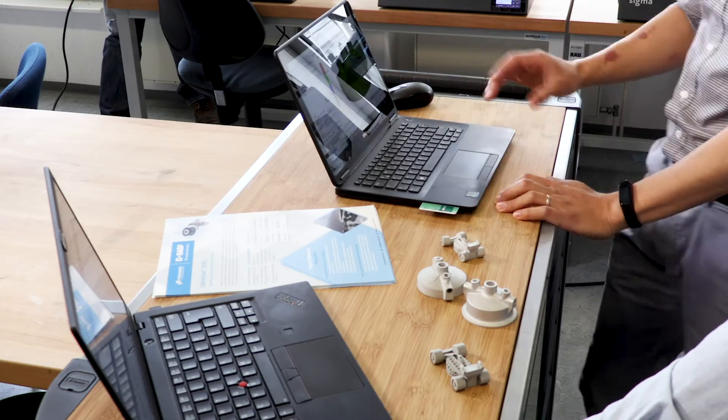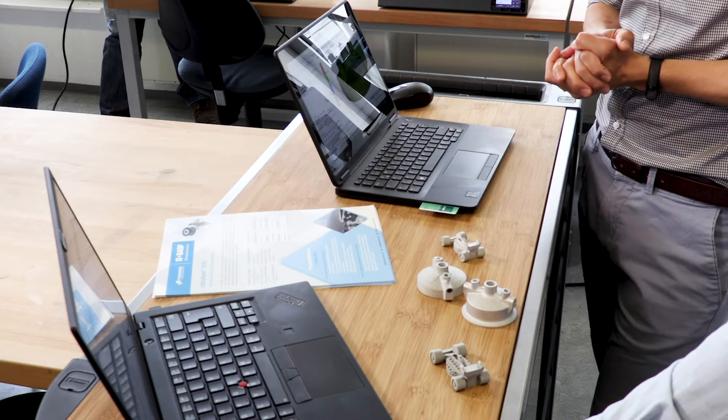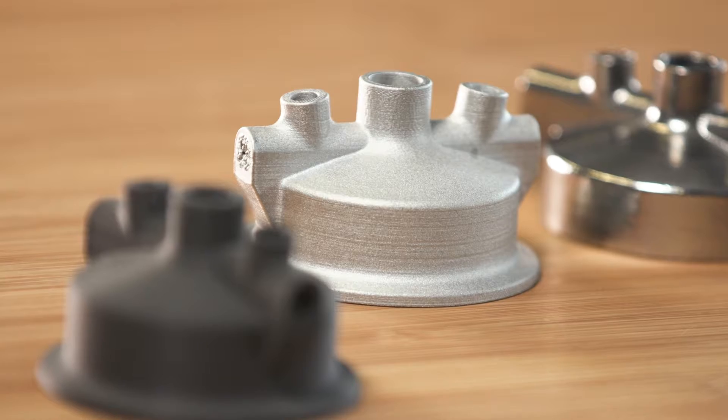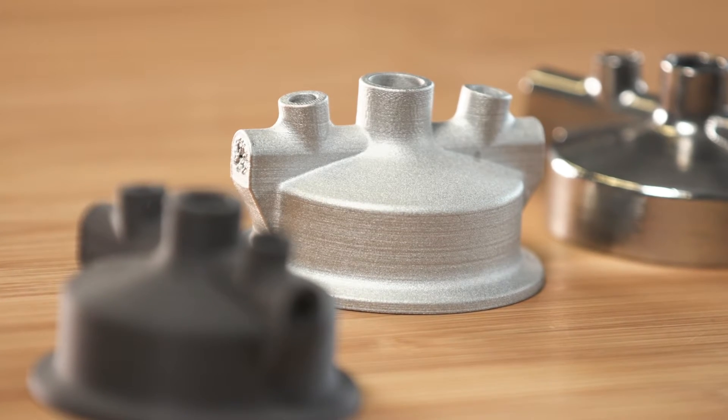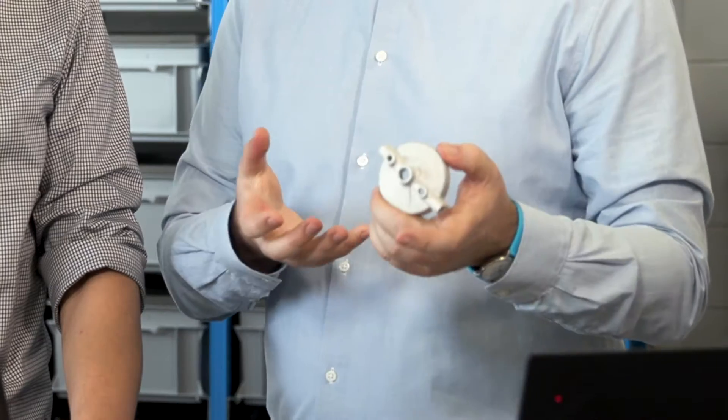So the first one is debinding simulation, checking the brown part stability. As you already mentioned, the brown part is quite fragile during debinding, and it could be the case that it will collapse during its own weight. Like we saw in this one, where we wanted to minimize the print time through using less support, but we run into that danger zone where you start getting cracks.